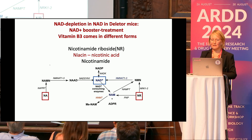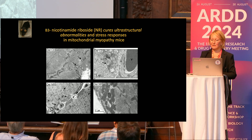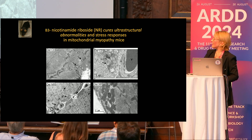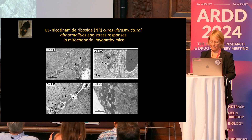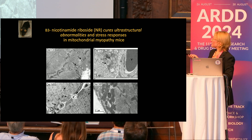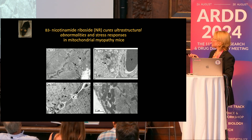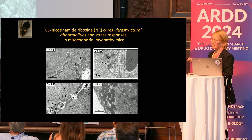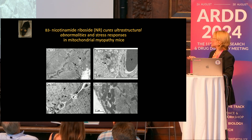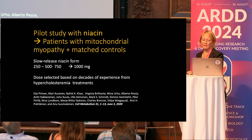For the mice, we used nicotinamide riboside because it was available at the time. In the untreated deleter, you can see the mitochondria are very swollen. But after NR treatment, there was a quite remarkable increase of mitochondrial mass and also this kind of denseness, which is typically associated with activity.